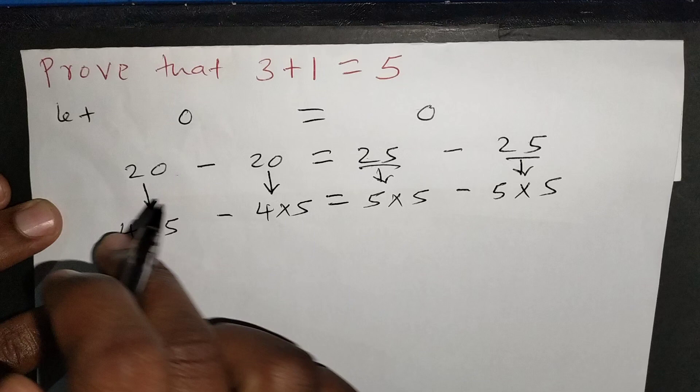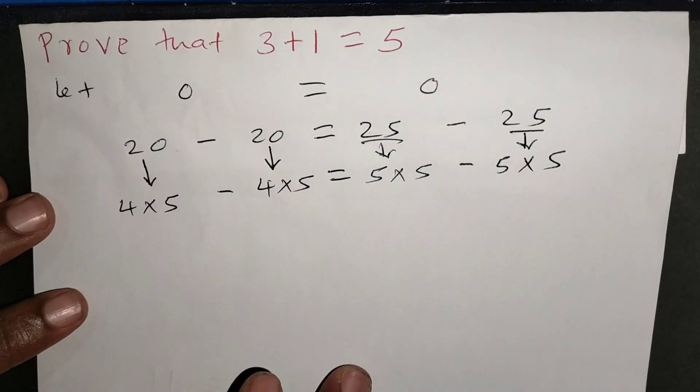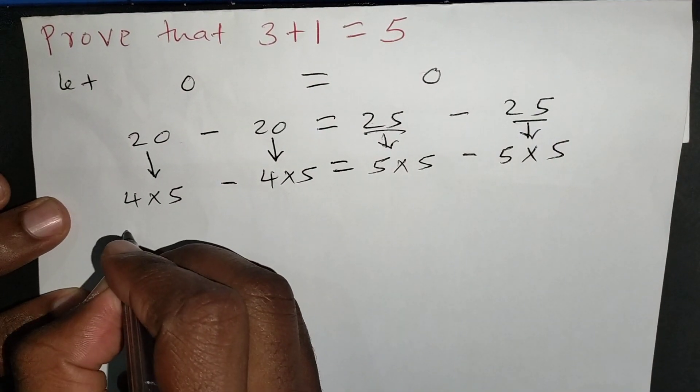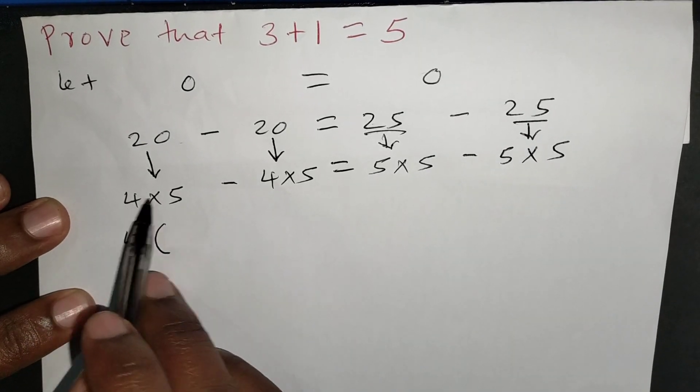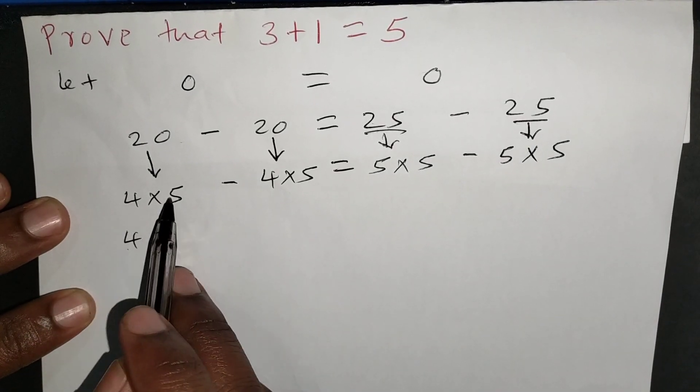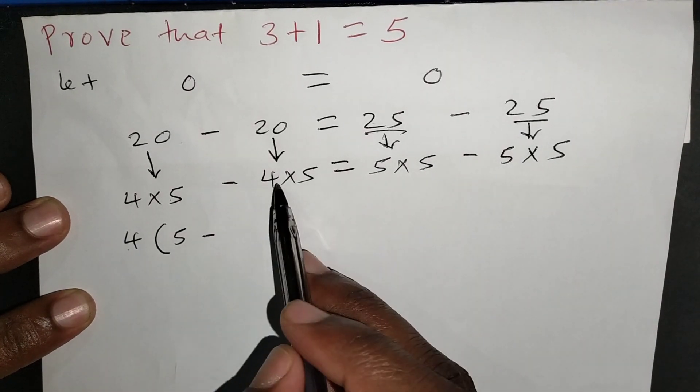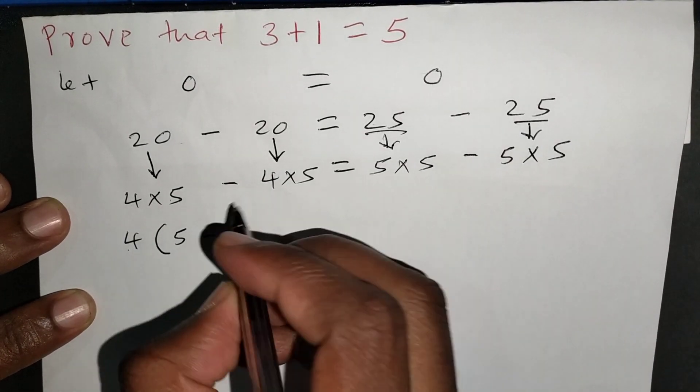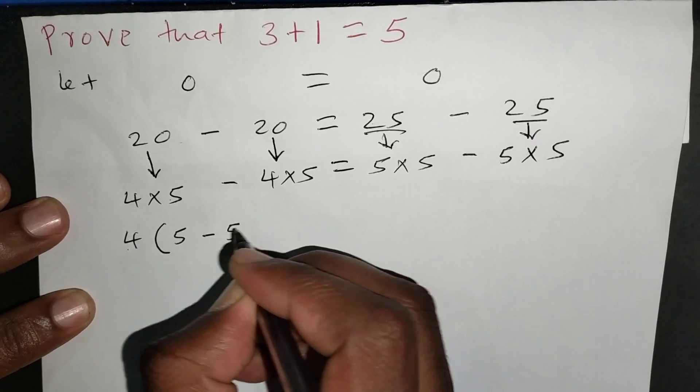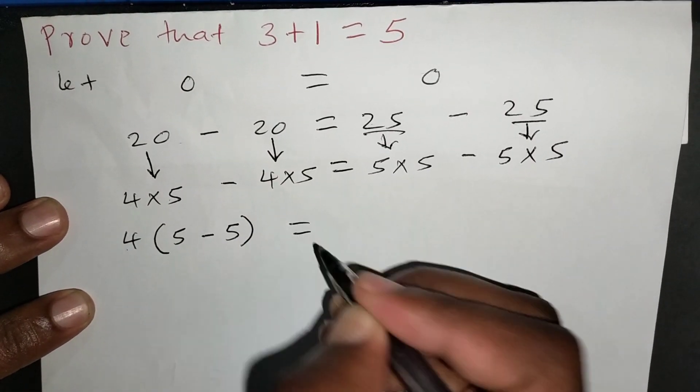Now, because 4 is common on the left hand side, I can simply factor it out. So I can have 4 times, 4 will go into 4 times 5, it will go there 5 times, minus 4 will go into 4 times 5, it will go there minus 5 times.